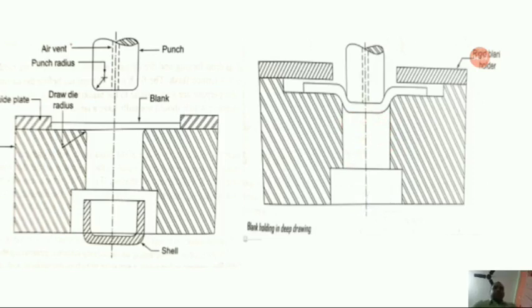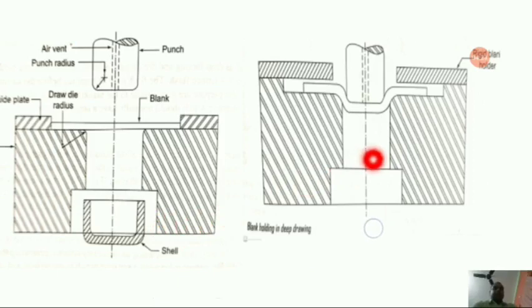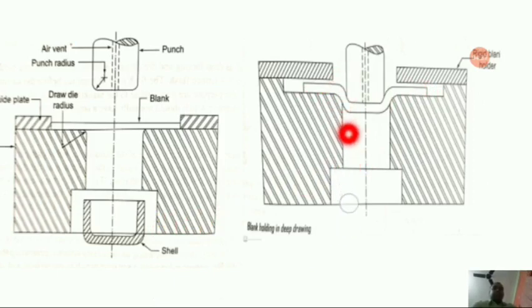When the cup reaches the counter boot portion of the die, the top edge of the cup formed around the punch expands slightly due to springback. When the punch moves in the return stroke, the cup would be stripped by this counter boot portion.